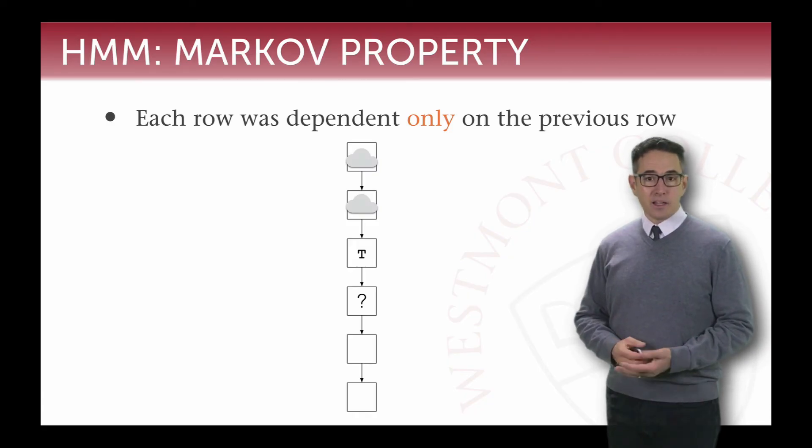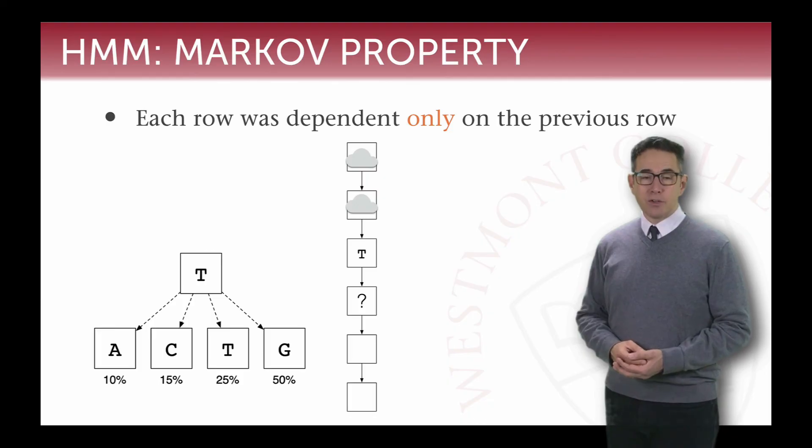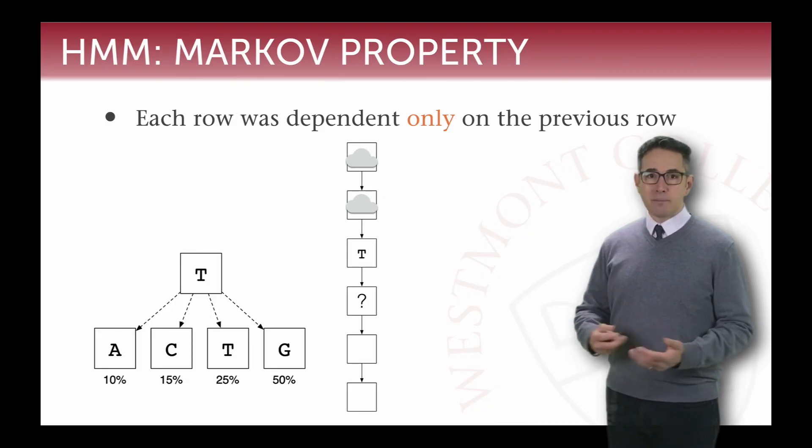And when we modeled this, we said, okay, well, there's some distribution over the letters that follow. So given that we have a T previously, the next letter can be an A, C, T, or G, and there's going to be some probability of what that is. And so if we're just going to predict the maximum probability next letter, well, we predict all other things being equal, that G is the most likely thing to come next.